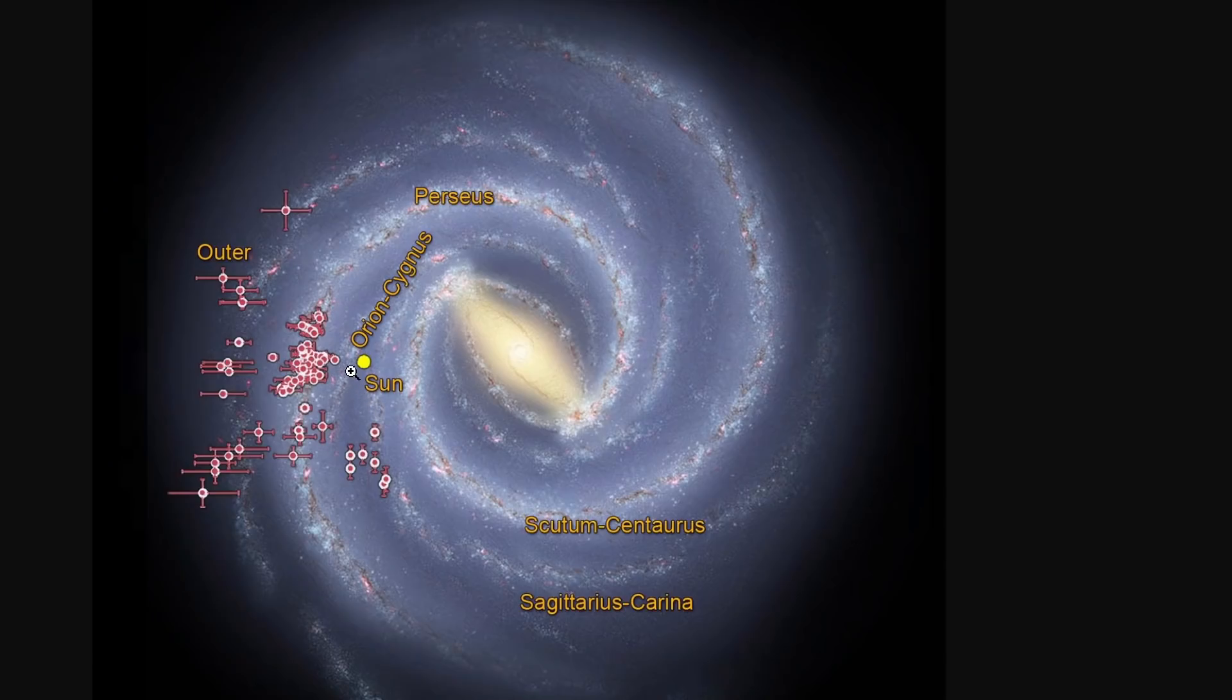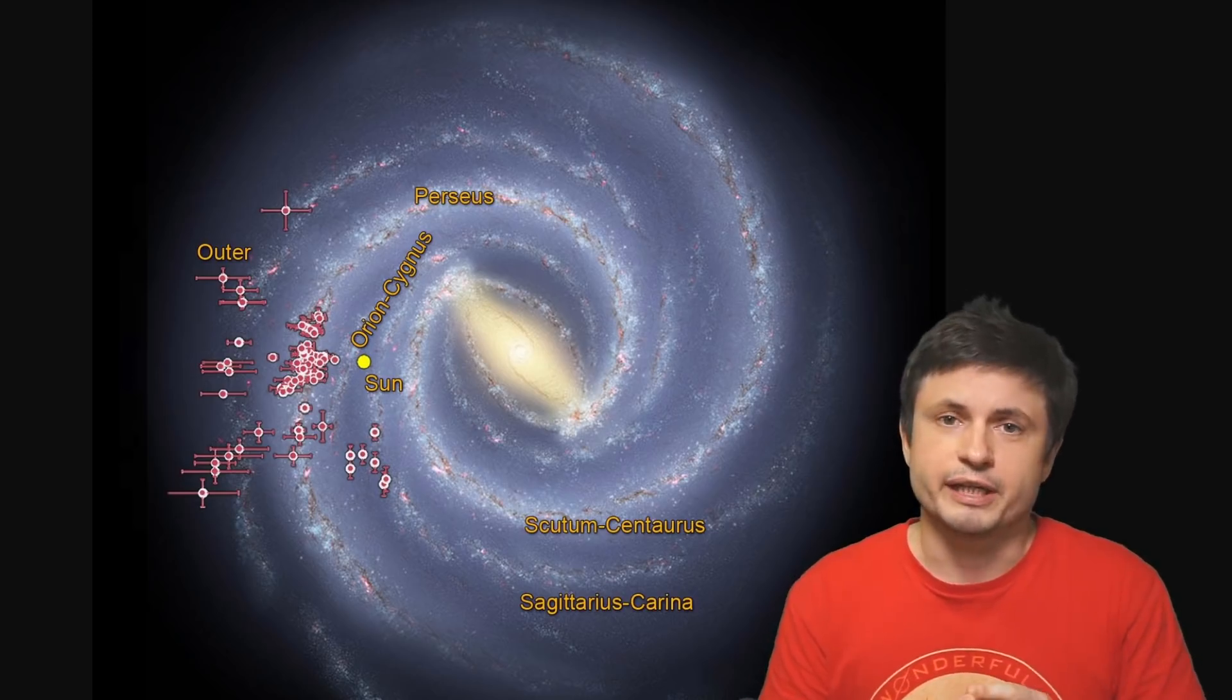And to date, the most accurate representation using the data from these telescopes makes the galaxy look something like this. This is from NASA and JPL lab, with our sun located somewhere right here, right between two major galactic arms, but inside a smaller galactic arm. But at the moment, this is still a relatively rough representation.